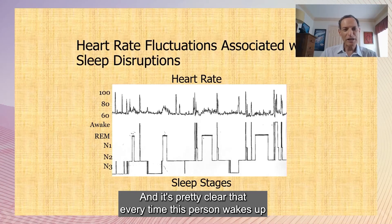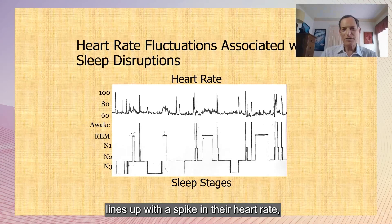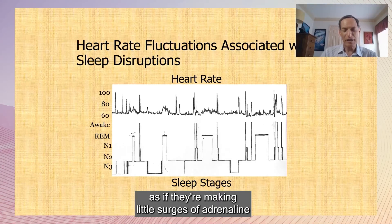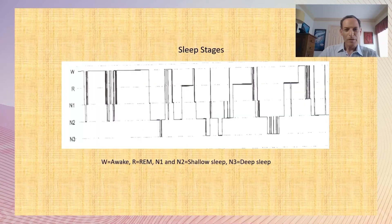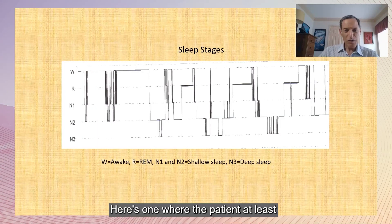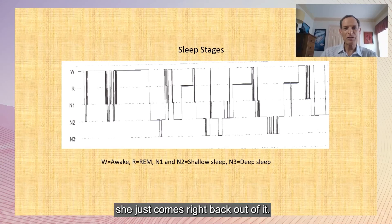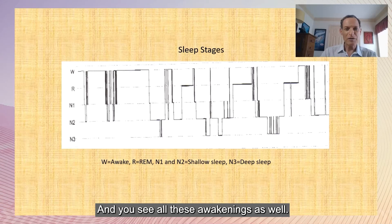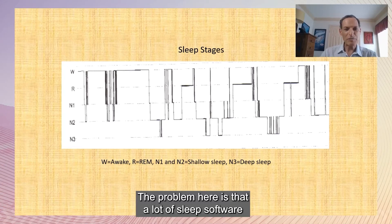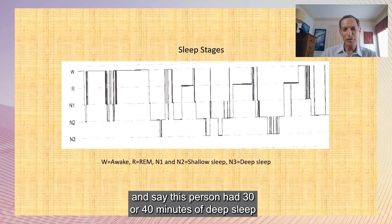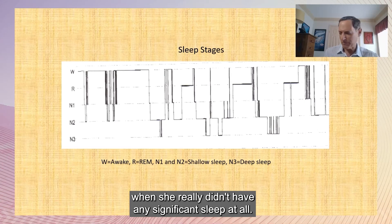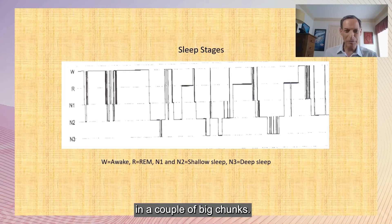What's behind all these disruptions? Here's a graph showing sleep stages and heart rate. Every time this person wakes up lines up with a spike in heart rate — as if making little surges of adrenaline throughout the night. Each time she gets into deep sleep, she comes right back out. Sleep software may add up these little bits and say she had 30 or 40 minutes of deep sleep when she really didn't — you need to get your deep sleep in a couple of big chunks.